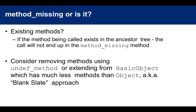Here's an interesting problem with method_missing: it only works for methods that are truly missing. You have to be careful — if the method exists in the ancestor tree, the call will not end up in method_missing as you'd expect; it will actually execute the method that already exists in the ancestor hierarchy. In that case, you could remove a method using undef_method, or you could extend from BasicObject.